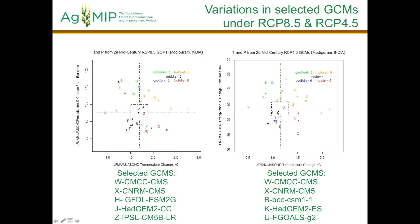Yes. Another thing is when we look into RCP 4.5, the last quadrant - these models are scattered here and there, even though there are five GCMs, but in a scattered way. And another thing is in the cool-wet quadrant, there is also scattered variability, not so much consistency among the GCMs.